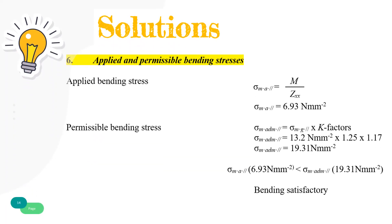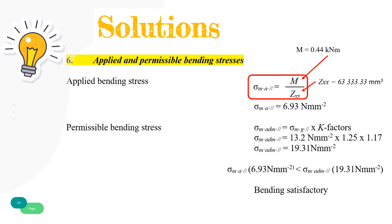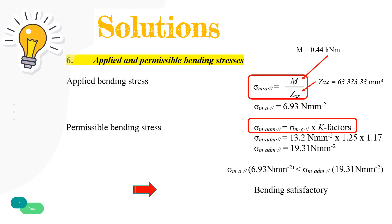In step number 6, we need to check the satisfaction of bending stress. The applied bending stress is applied moment over section modulus. M is applied moment, calculated as 0.44 kNm, and section modulus is 633,333.33 mm³. The applied bending stress is 6.93 N/mm². The permissible bending stress determined by multiplying grade stress by all related modification factors becomes 19.31 N/mm². The bending stress is satisfactory due to applied bending stress not exceeding the permissible bending stress.